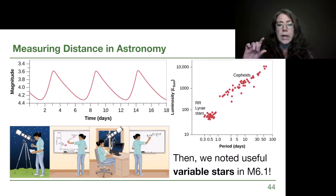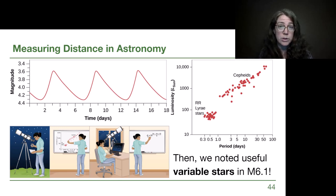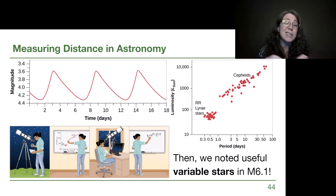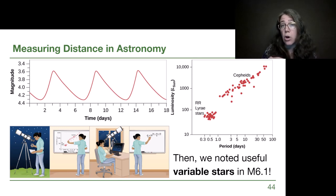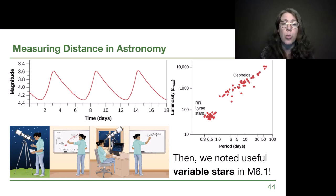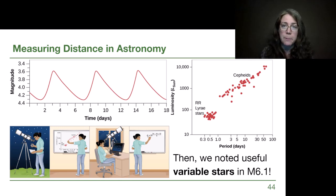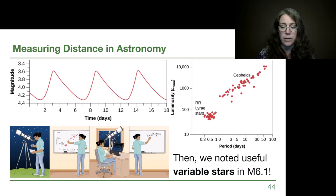When we introduced Cepheid variable stars at the start of this module, we talked about the fact that in order to get a period-luminosity relation, those Cepheid variable stars had to be calibrated. A handful — about a dozen — needed to have parallax measurements also, so that we knew how truly far away they were. Otherwise all we would have is a period-apparent brightness relation, and that doesn't do much for us. So we had to have a solid understanding of parallax in order to get the next step up to Cepheid variables.